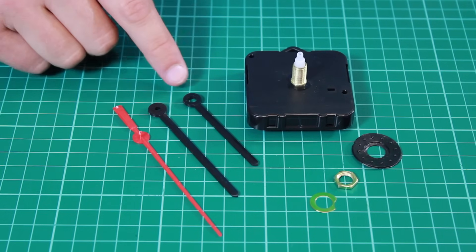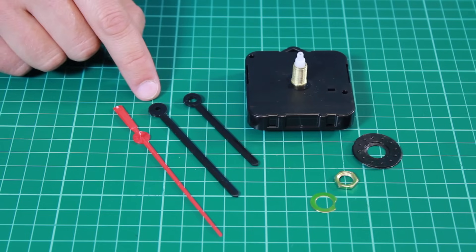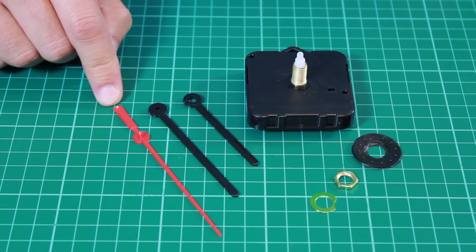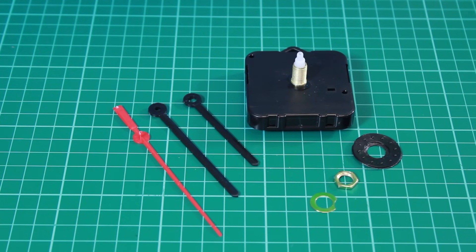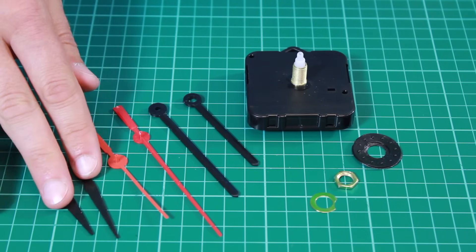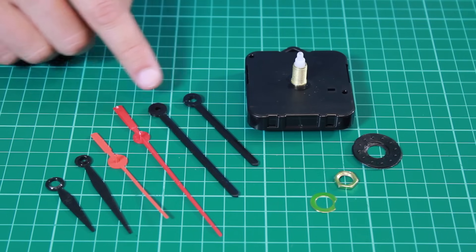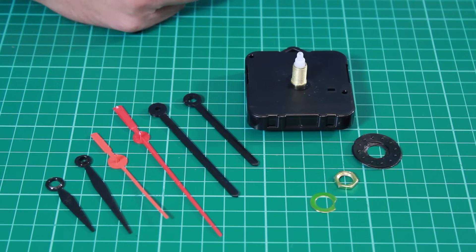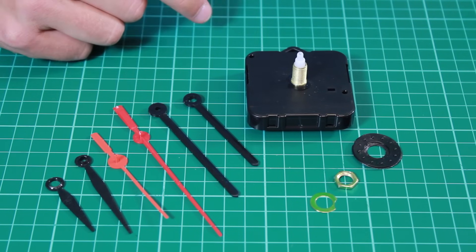Then we have the clock hands themselves. So we have an hour hand, a minute hand and a second hand. It's worth noting that these hands are slightly different to the older movement that we used to sell. If I bring these in here, you can see that the new hands are slightly longer, though the quality of the moulding is very good.